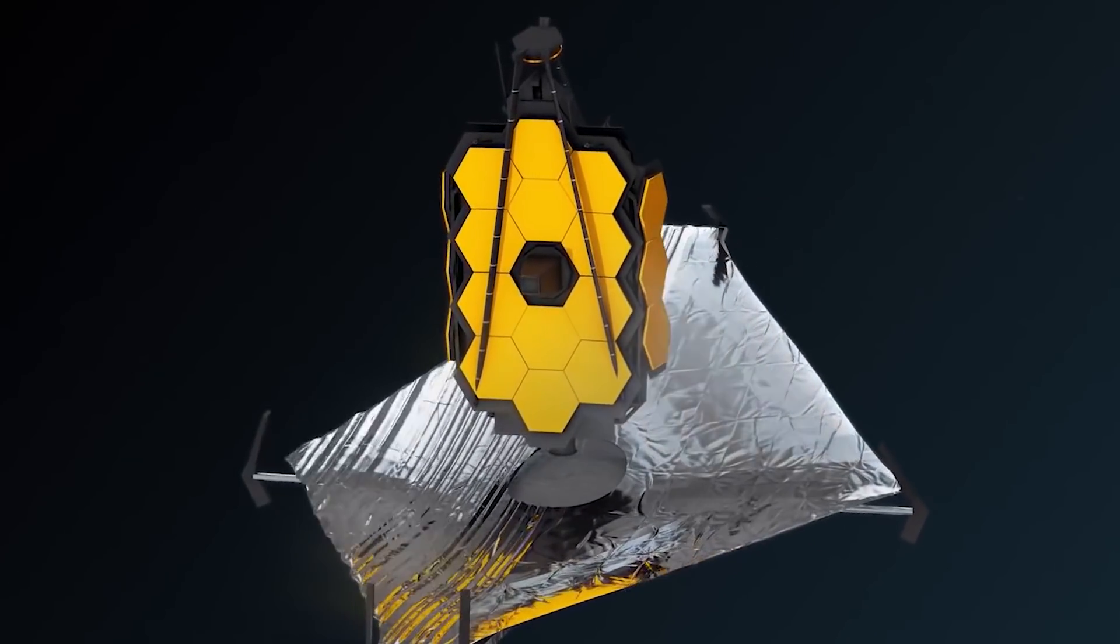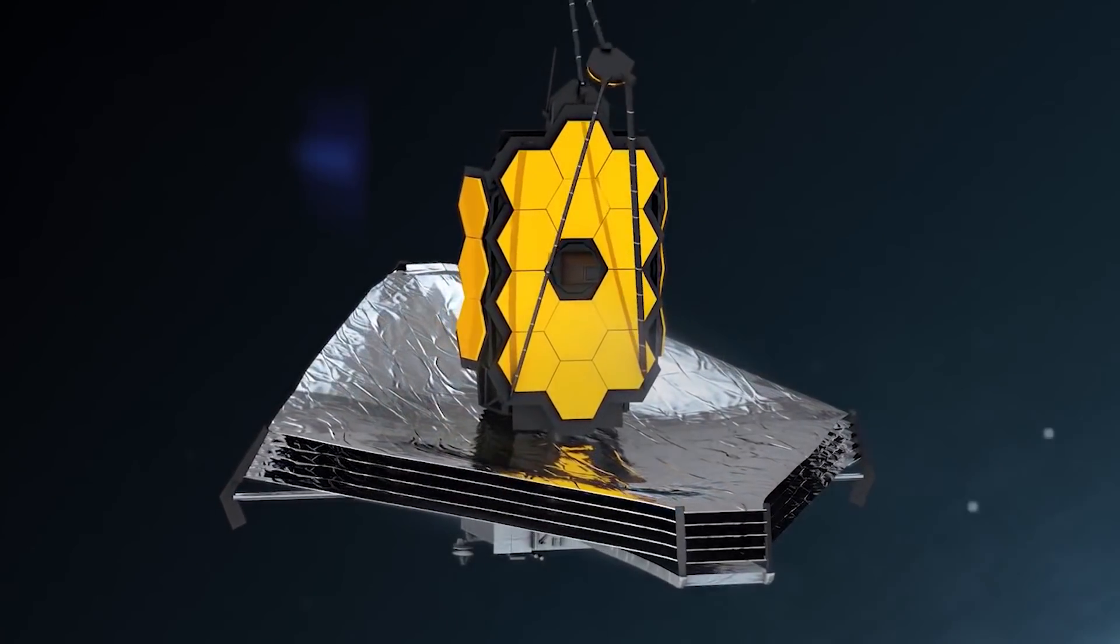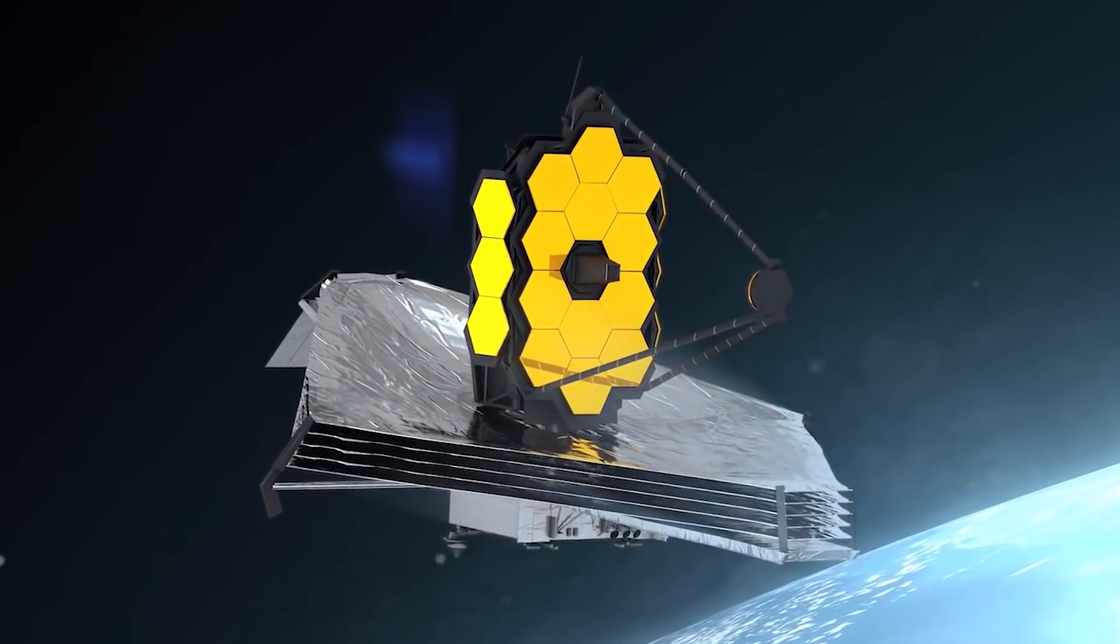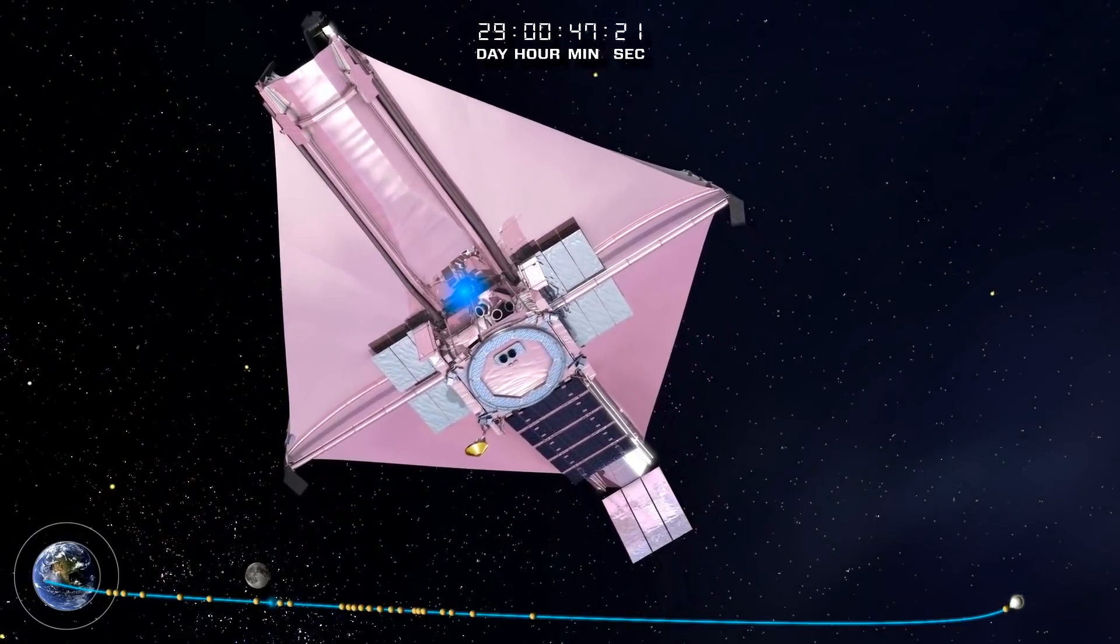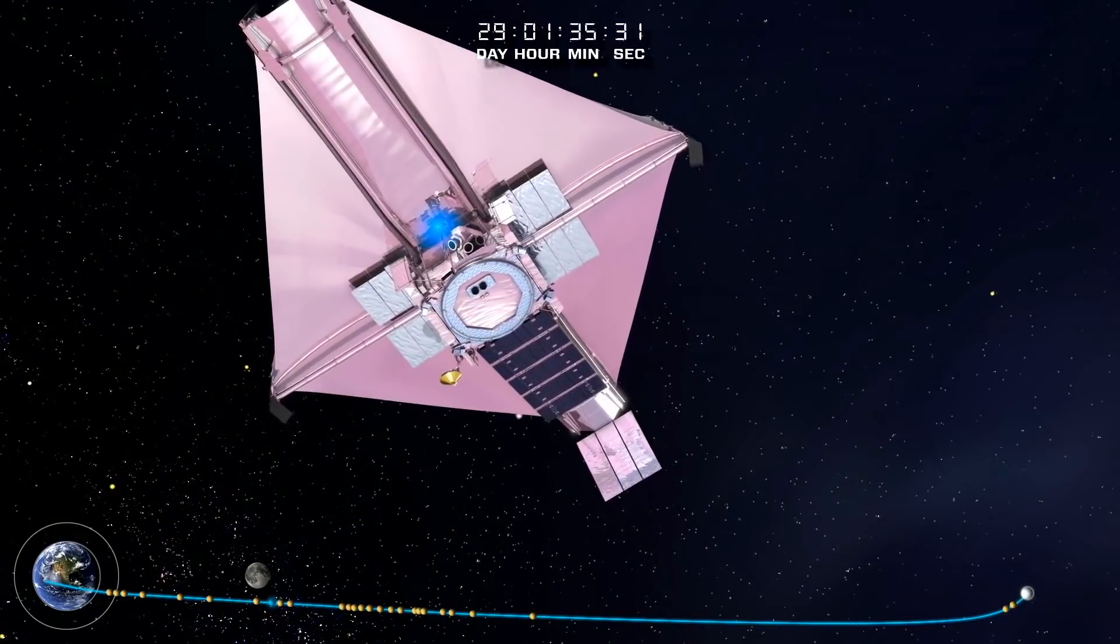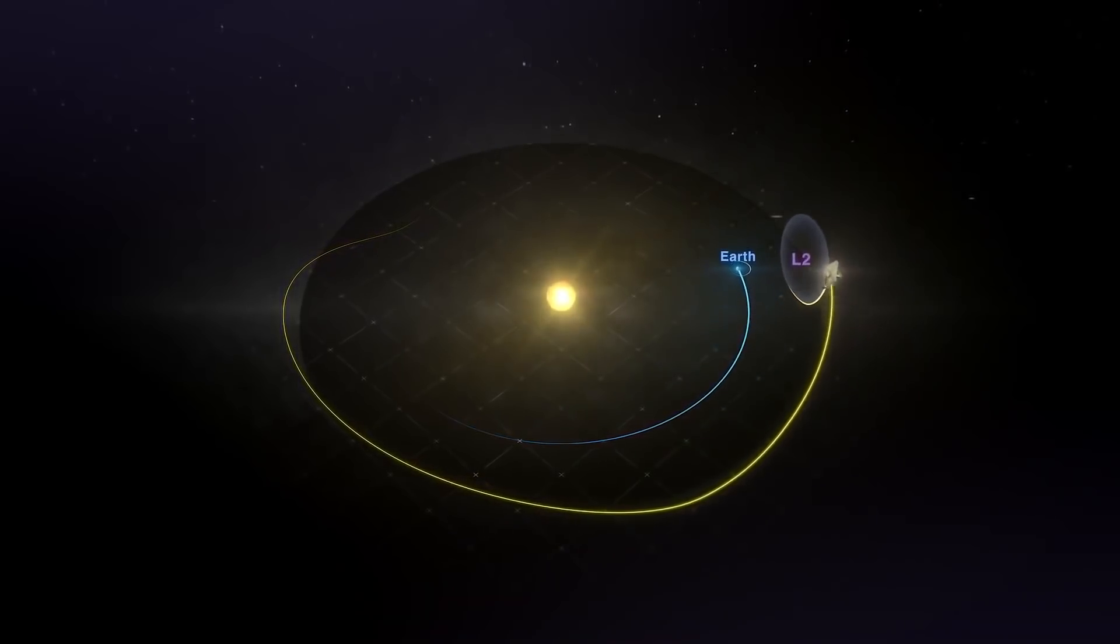The second, MCC-1B, is a shorter burn performed before the sunshield deployment is scheduled to start. The final maneuver, MCC-2, performed 29 days after launch, is designed to insert Webb into the optimum orbit around L2.